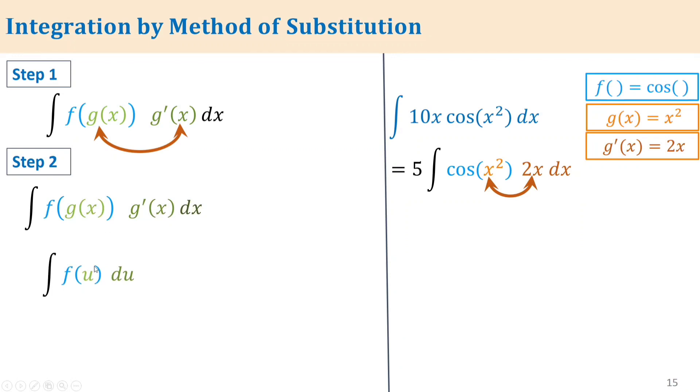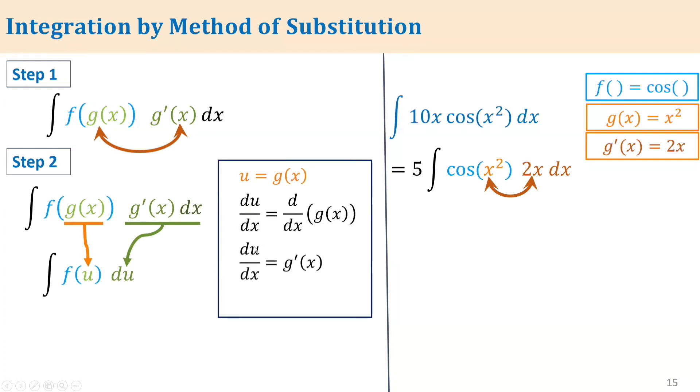The substitution method works as follows: let u equal g(x). Then du divided by dx equals g'(x), which means du equals g'(x) dx. We can substitute these into our integral, replacing g(x) with u and g'(x) dx with du.